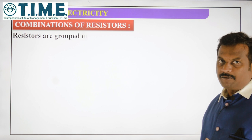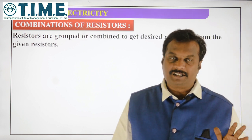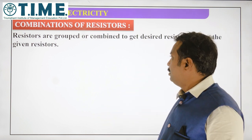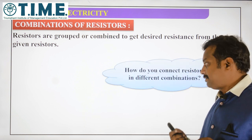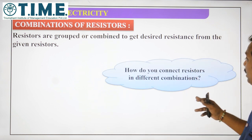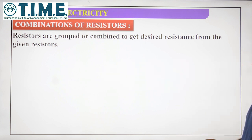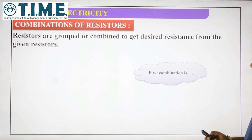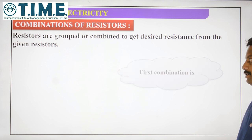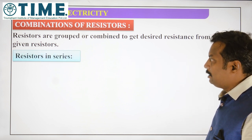As you all know, there are only two types of combination in your 12th standard book. One is parallel combination and the other one is series combination. Resistors are grouped or combined to get the desired resistance from the given resistors. There are mainly two combinations: the first is series combination and the second is parallel combination.